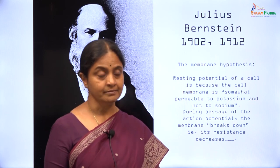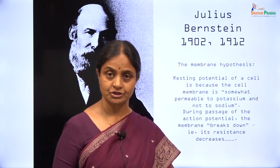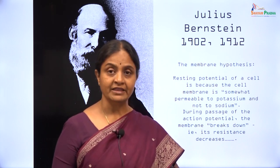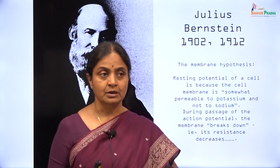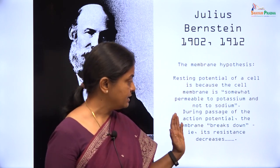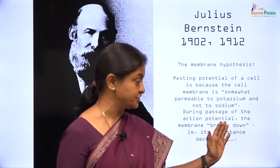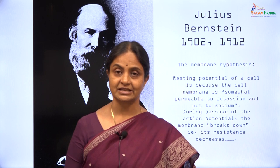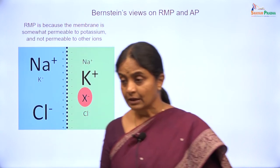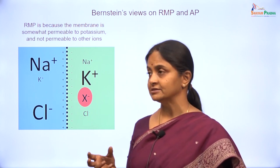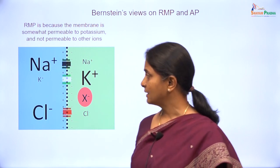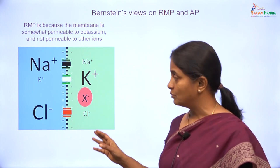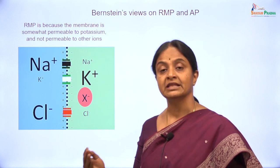Julius Bernstein did not stop there. He was able to measure potential differences across the membrane using what is called a rheometer, and he found that the internal negativity reduced or dissipated when the membrane was excited. He said that the action potential, or the period of excitation, is a period where the membrane breaks down and its resistance decreases — fantastic insight. He was entirely correct in his statement that the resting nerve cell was permeable only to potassium at rest, and that's why the cell is at the potassium equilibrium potential.